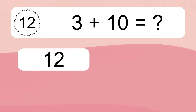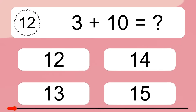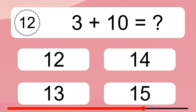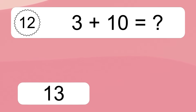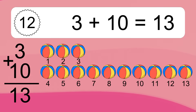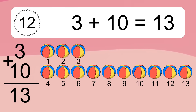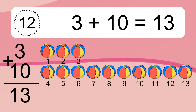3 plus 10 equals what? 3 plus 10 equals 13. Let's count it: 1, 2, 3, 4, 5, 6, 7, 8, 9, 10, 11, 12, 13.